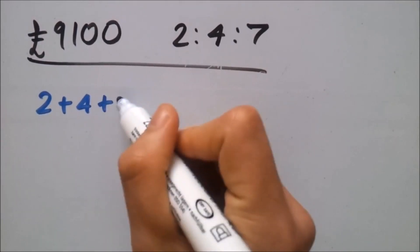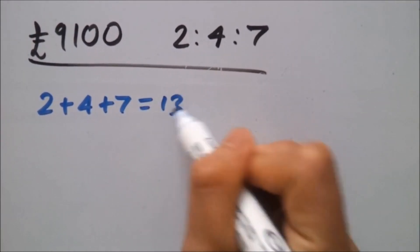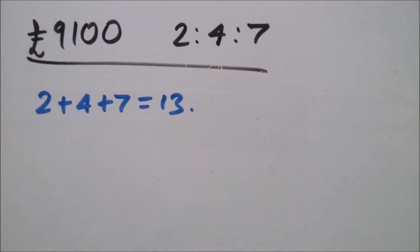So let me just write that step for you. So now we know altogether that there are 13 parts, and that's how much one needs to split up by.